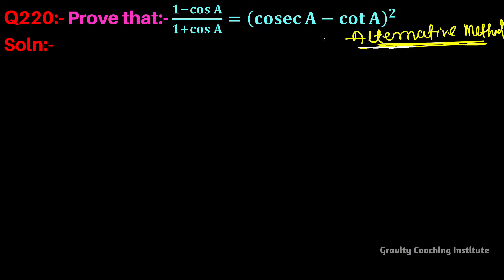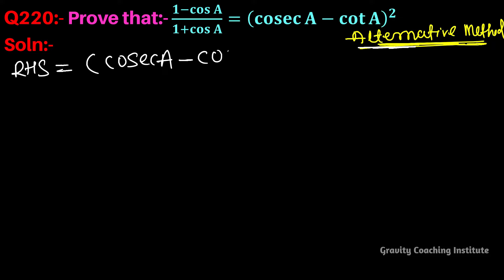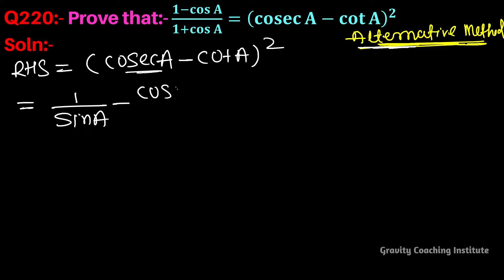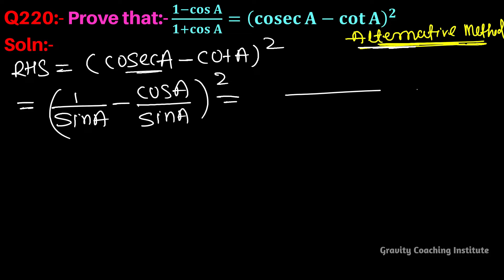Alternative method: In this we will prove from RHS to LHS. RHS is (cosec A - cot A)². The formula for cosec A is 1/sin A and for cot A is cos A/sin A. So we have (1/sin A - cos A/sin A)².